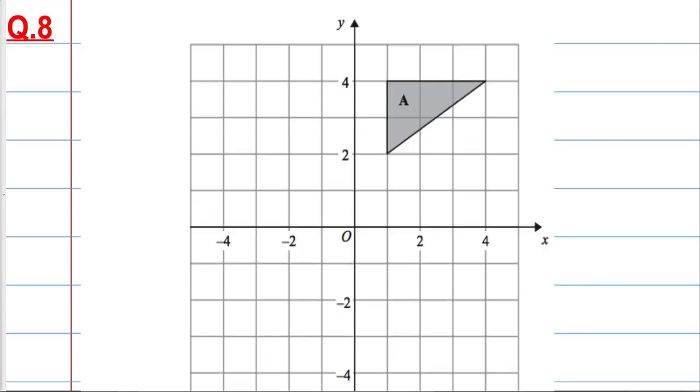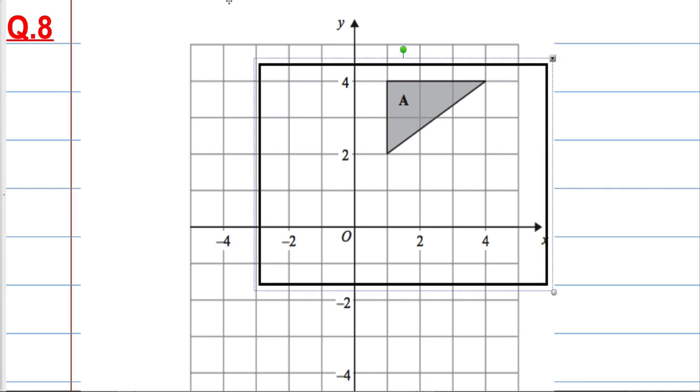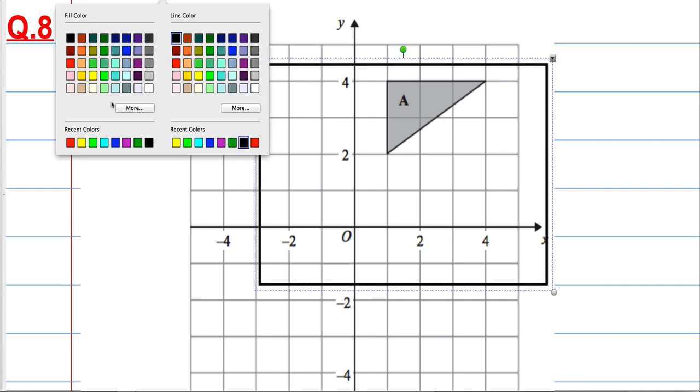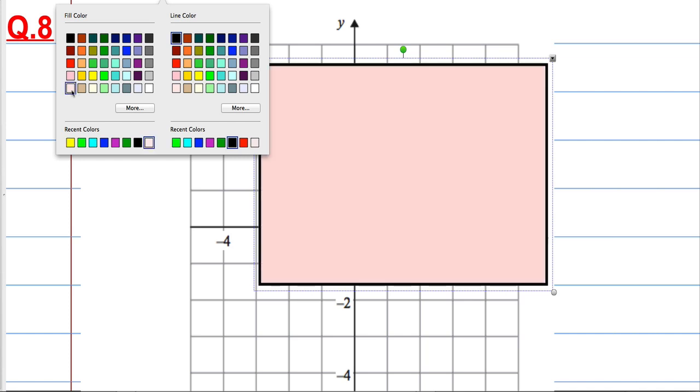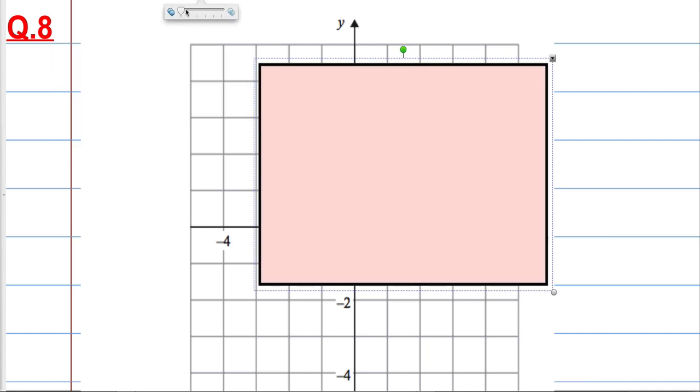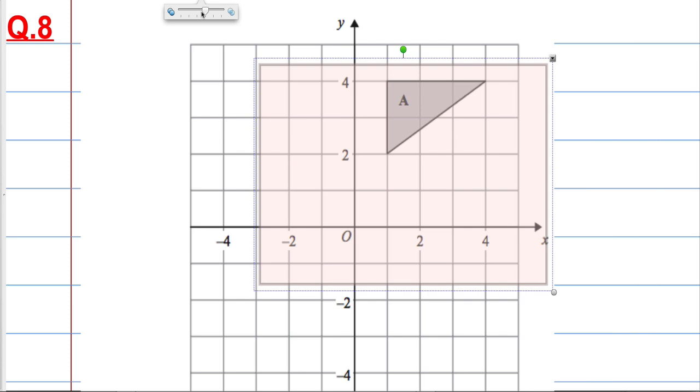Some people can do this by eye, other people might need to use a piece of tracing paper so I'm going to use some tracing paper. We have a piece of tracing paper such as this, let's fill it and make it transparent so we can see what's going on.